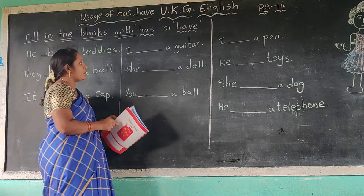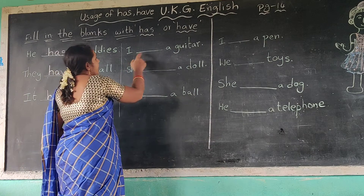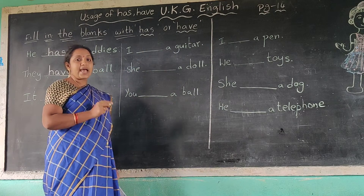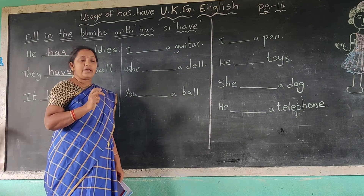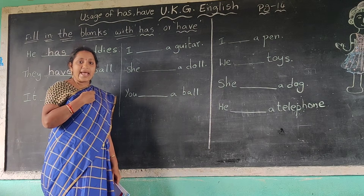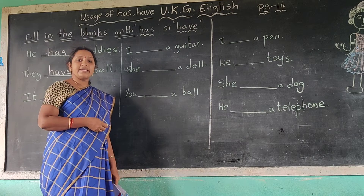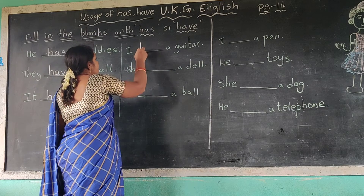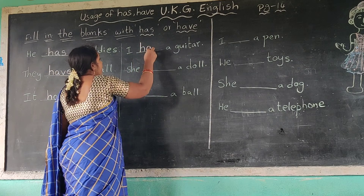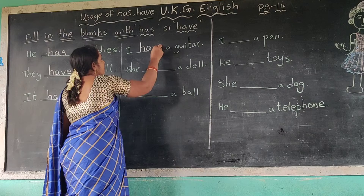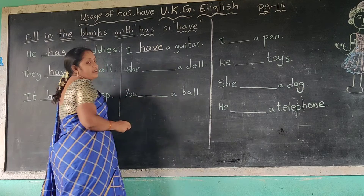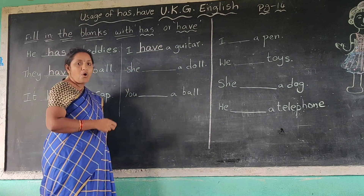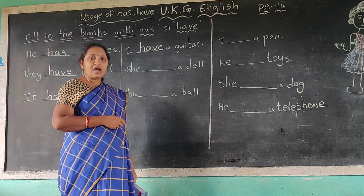Next one: I dash a guitar. I have a cap — I have a guitar. I have a guitar. Have, spelling H-A-V-E. I have a guitar.